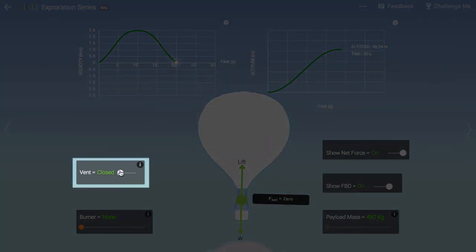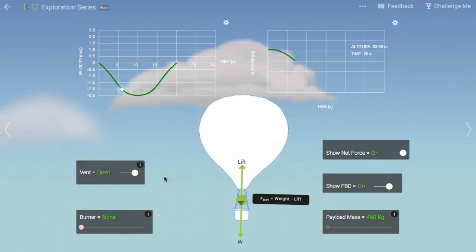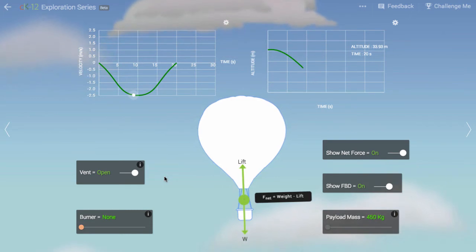Hot air balloons have vents at the top. The vents allow us to remove air from the interior. This air is replaced by colder air, and the overall weight of the air in the balloon increases.